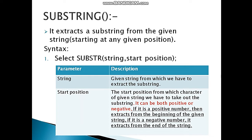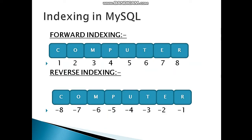The string parameter is any given string from which you have to extract the substring — it could be a name, a friend's name, or a complete sentence. Start position means the position from which we start counting the characters to extract as a substring. It can be positive or negative. If positive, we follow forward indexing; if negative, we follow reverse indexing. Forward indexing goes left to right, and reverse indexing goes right to left.